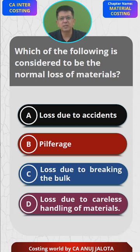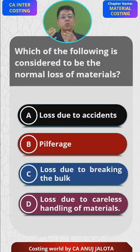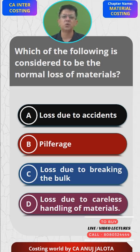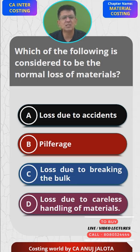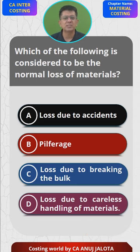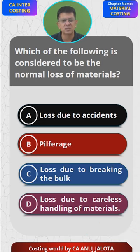Option C — loss due to breaking the bulk — should be the correct answer. When goods arrive in large packed quantities and you break open the packaging, some goods will usually break. For example, if you import goods from outside, you know in advance that around two to three percent will be the loss. So this is an expected, predictable loss, which is exactly what defines a normal loss.